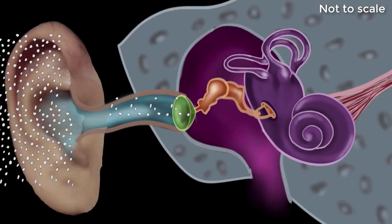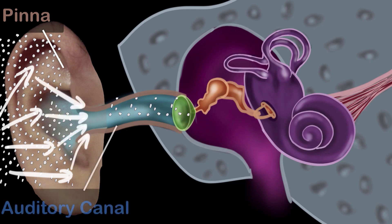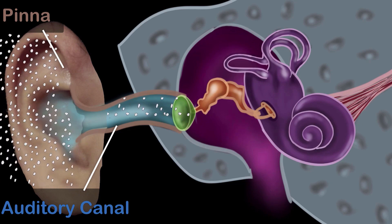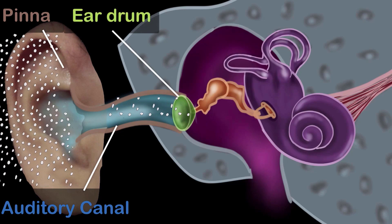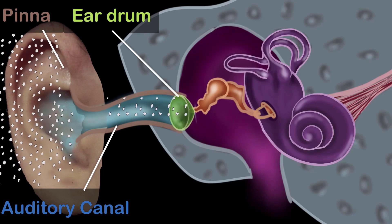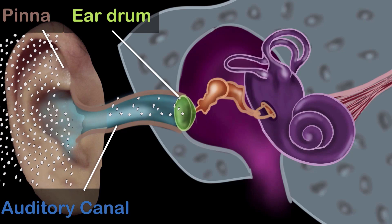The outer ear starts with the pinna. It's the part that you can see and touch — or in my case, the part that my mom would twist quite often. Its job is to collect as much sound waves as possible and channel it into the auditory canal. The sound waves pass through the auditory canal and eventually meet the eardrum, shown in green. The eardrum is a transparent membrane which is super sensitive to the vibrations of the air, so as the air vibrates, the eardrum starts vibrating just like the skin of a drum. The eardrum also separates the outer ear from the middle ear.